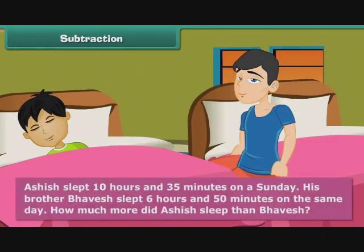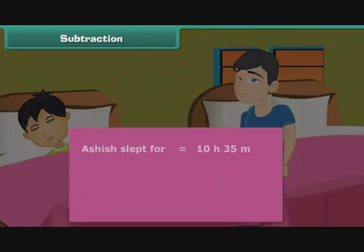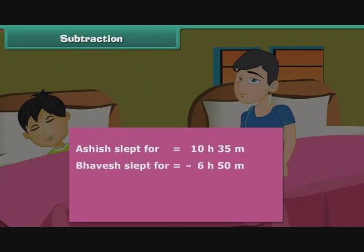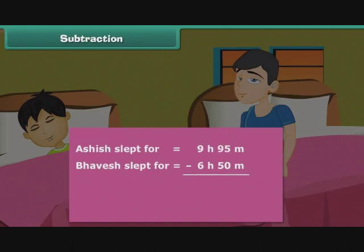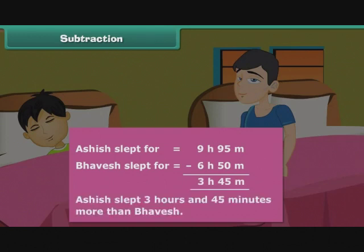Ashish slept for 10 hours 35 minutes on a Sunday. His brother Bhavesh slept 6 hours 50 minutes on the same day. How much more did Ashish sleep? We cannot subtract 50 from 35, so we borrow an hour — adding 60 minutes and subtracting 1 from hours. Therefore, Ashish slept 3 hours and 45 minutes more than Bhavesh.